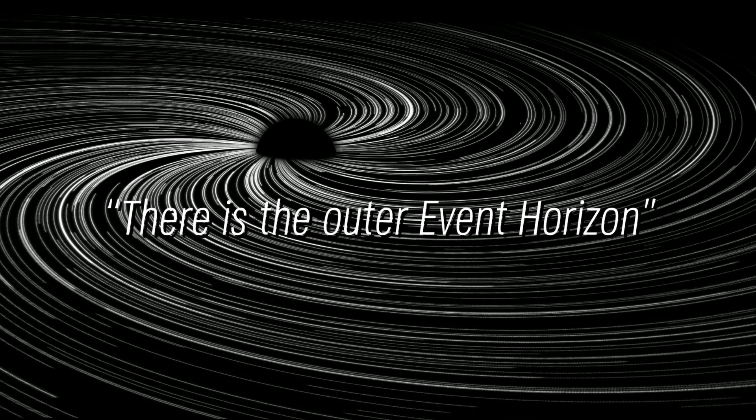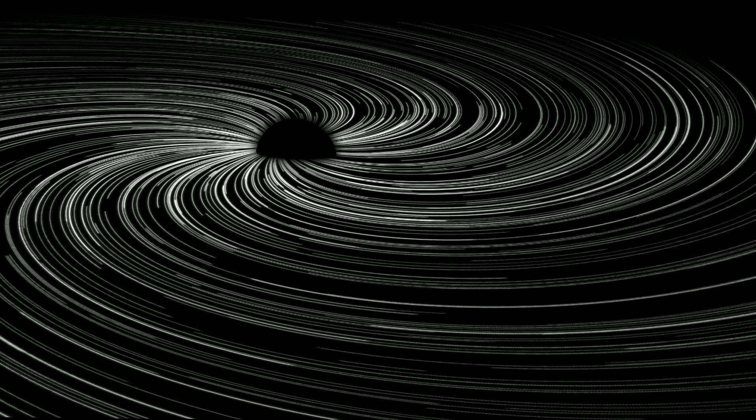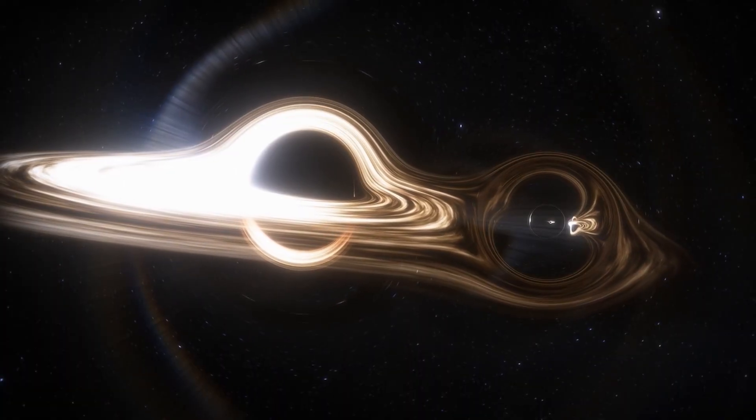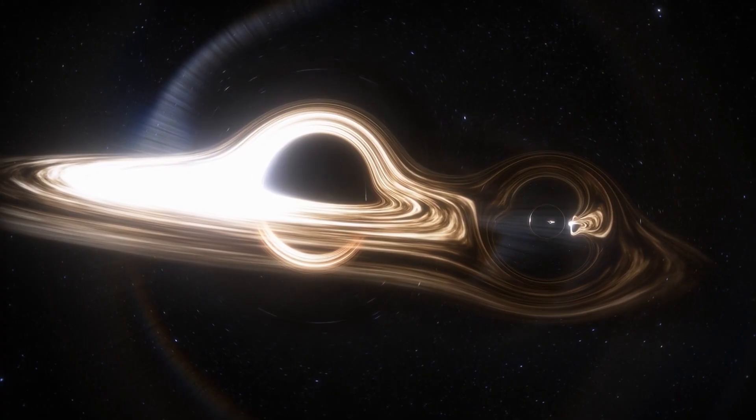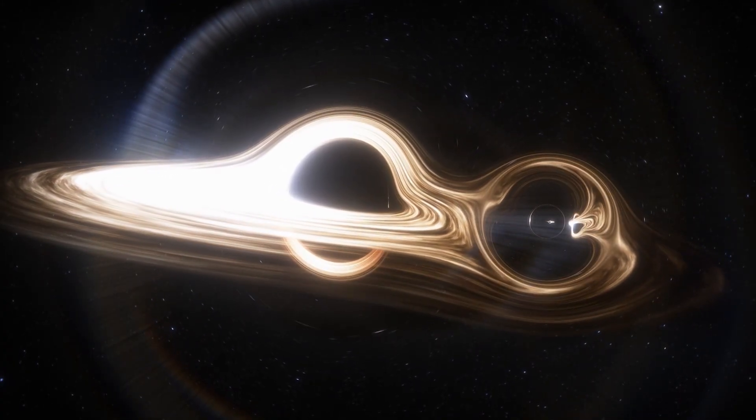First, there is the outer event horizon, a boundary that surrounds the mouth of every black hole. Once something reaches this point of the black hole, it cannot escape and is either trapped there or is pulled deeper on its journey to the singularity.